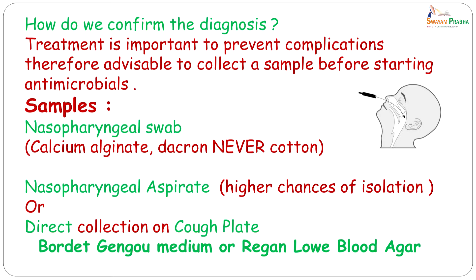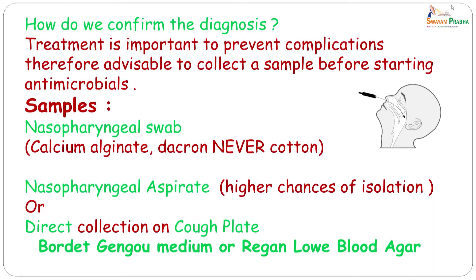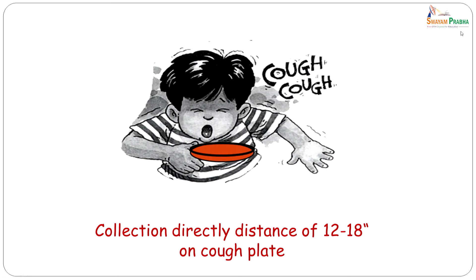What are the samples we would collect? We could collect a nasopharyngeal swab and, as the picture depicts, you need to use a swab which has a long arm and is flexible because you have to actually go back to the nasopharynx to collect it. These swabs should be made of either calcium alginate or dacron, but never cotton, because cotton inhibits the growth of Bordetella. A nasopharyngeal aspirate would give you a higher chance of isolation, and the third method is to give the patient a cough plate — which is Bordet-Gengu medium or Ragan-Laui medium — on which the patient coughs directly. The cough plate is held at a distance of 12 to 18 inches in front of the child when he is coughing.